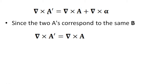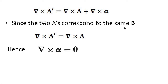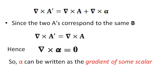Now we can write del cross A' equal to del cross A, which means the difference is zero: del cross alpha equal to 0. Curl of alpha equal to 0 means alpha can be written as a gradient of some scalar — that is, alpha is equal to gradient of lambda.